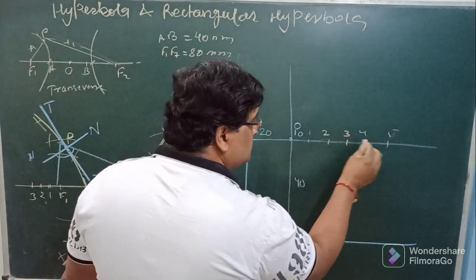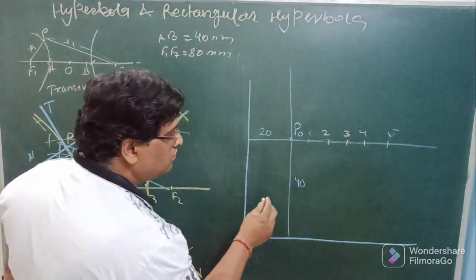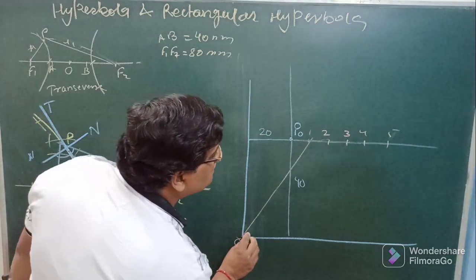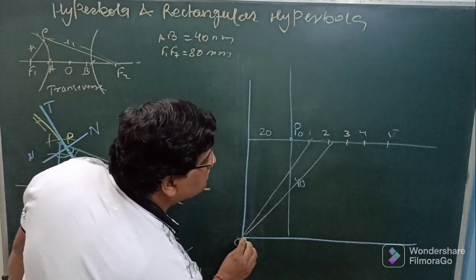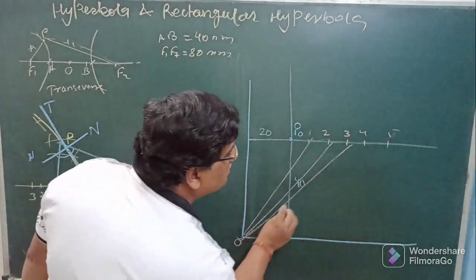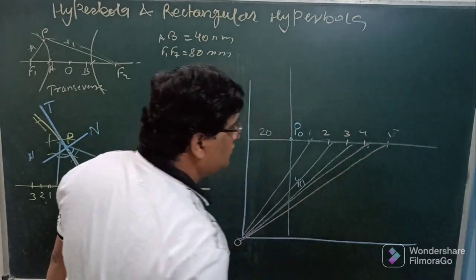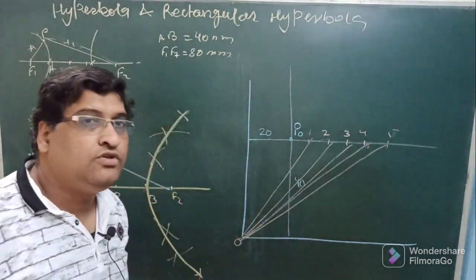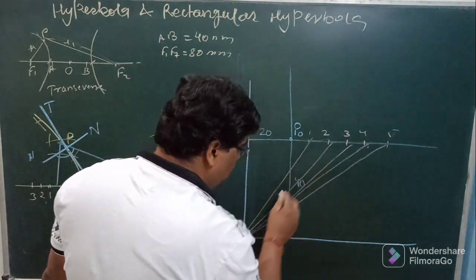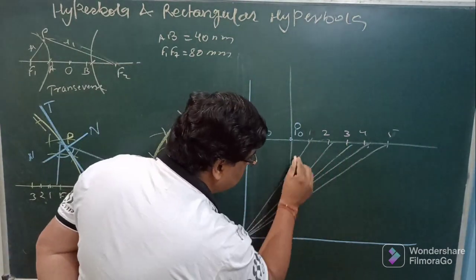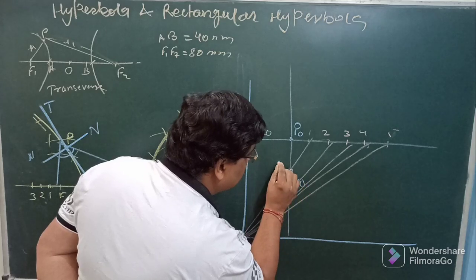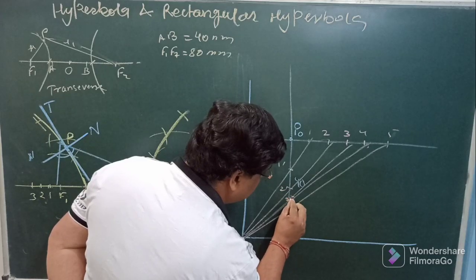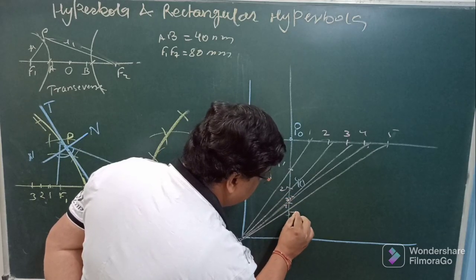Initially the point is here, this is p0 position. Now what you have to do mark some points arbitrarily, these points may or may not be equal, say these are 1, 2, 3, 4, 5. Now join these points with O so this will be first point, second point, third point, fourth point and fifth point.